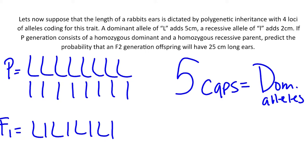What we're going to do is run a binomial expansion. Remember, our binomial expansion is (A + B) to some power. This power we're going to find: four alleles, two copies of each — four times two is eight. So our binomial expansion is (A + B) to the eighth power.